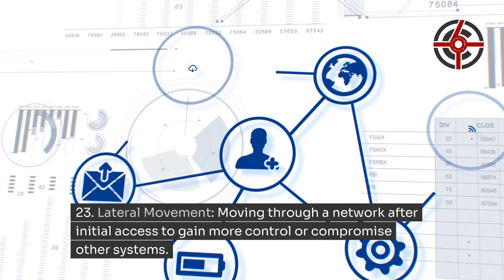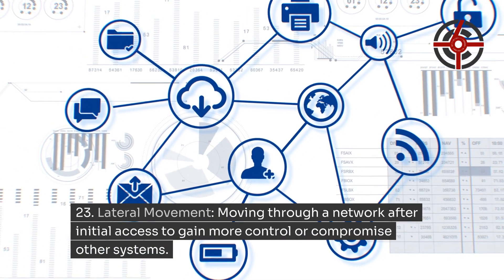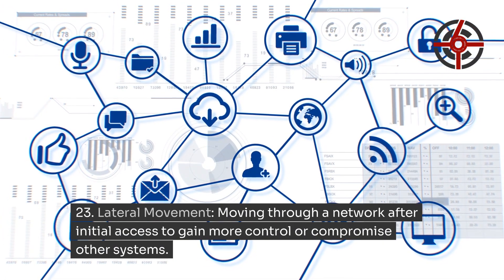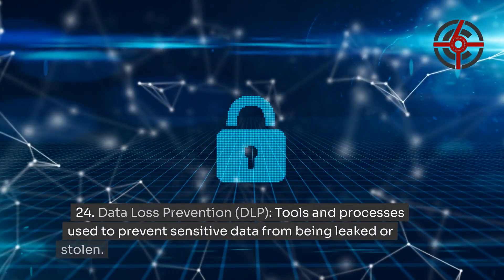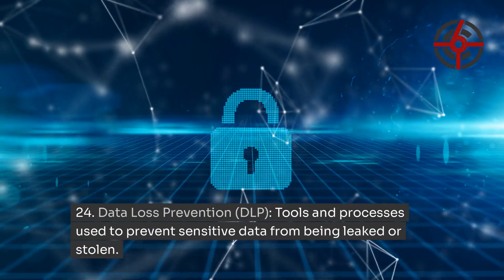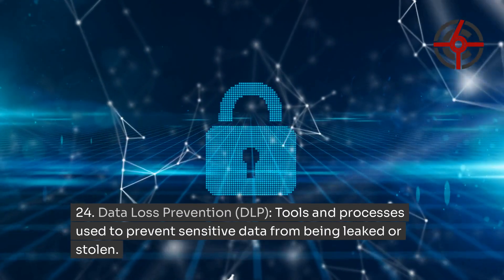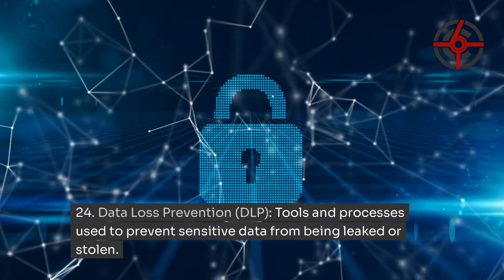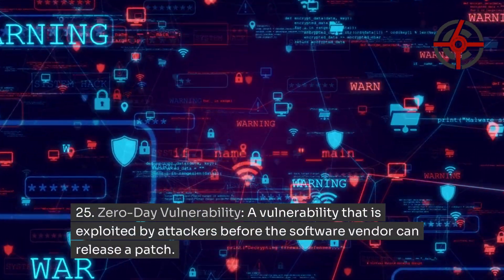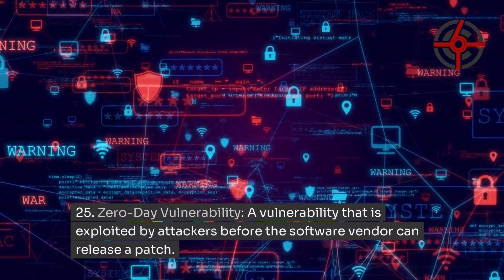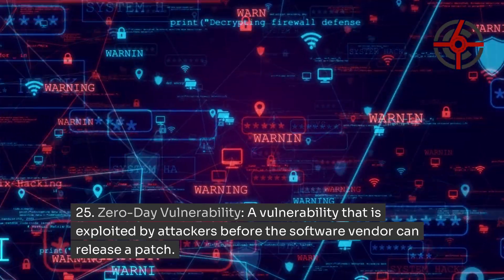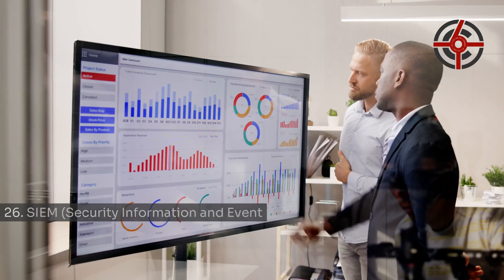Lateral Movement: moving through a network after initial access to gain more control or compromise other systems. Data Loss Prevention: tools and processes used to prevent sensitive data from being leaked or stolen. Zero Day Vulnerability: a vulnerability that is exploited by attackers before the software vendor can release a patch.